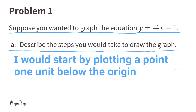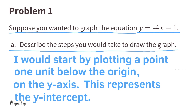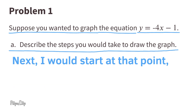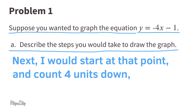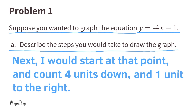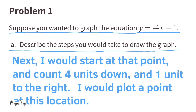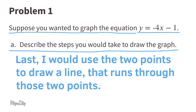I would start by plotting a point one unit below the origin on the y-axis. This represents the y-intercept. Next, I would start at that point and count 4 units down and 1 unit to the right, and plot a point at this location. Last, I would use those two points to draw a line that runs through them.